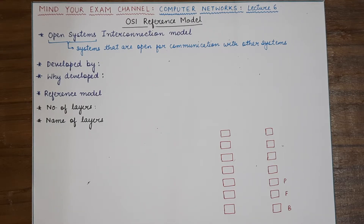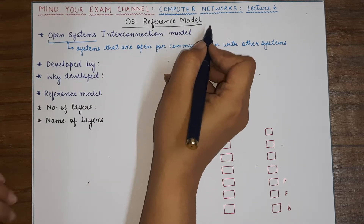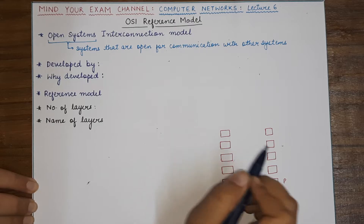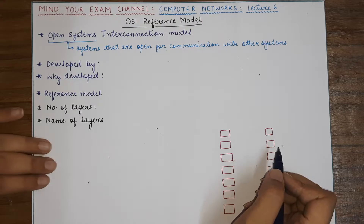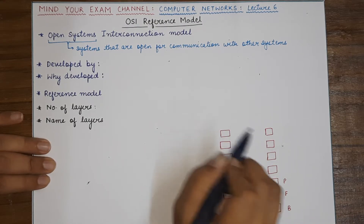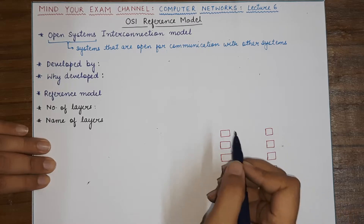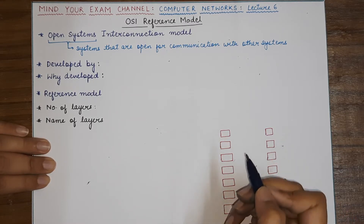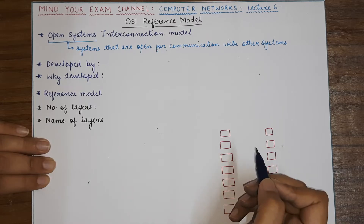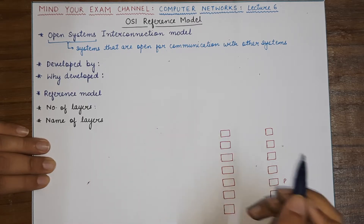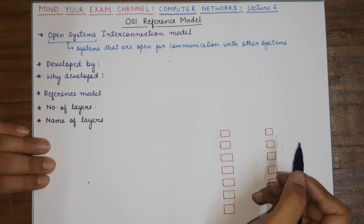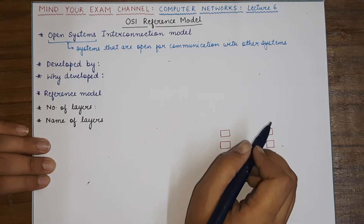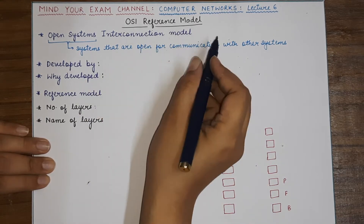Hello students, welcome back to my channel. In this video we will be studying about the OSI reference model. In the previous video we studied the general architecture of the network — the software architecture that consisted of different kinds of layers and the protocols that are followed. We understood what layers, protocols, interfaces are, and one of the most prominent architectures defined is the OSI reference model.